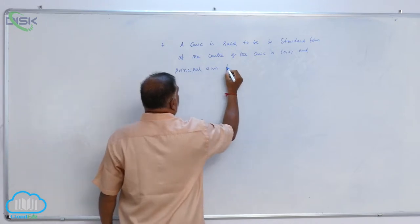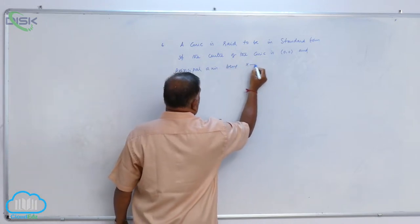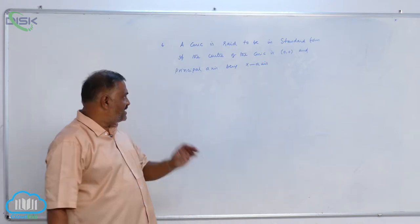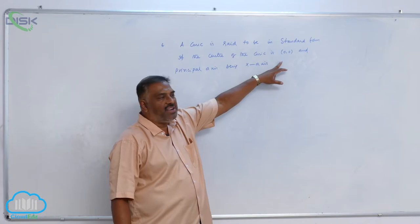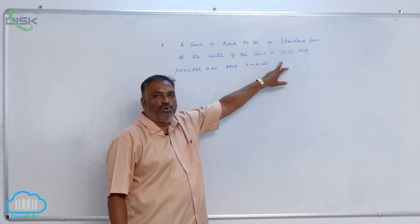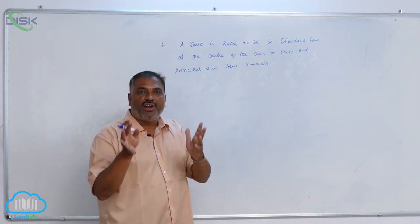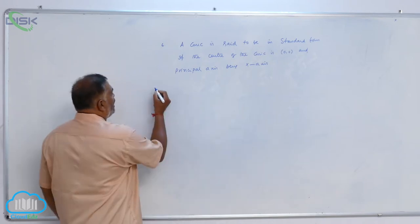...the principal axis is the x-axis. That means whenever you take the principal axis as the x-axis and center of the conic as (0,0), then the conic is said to be in standard form.